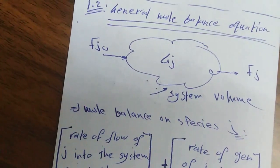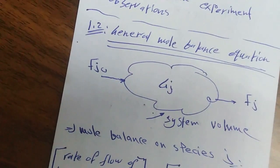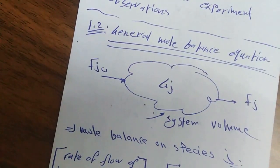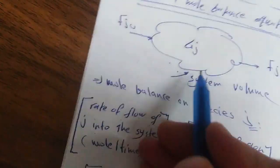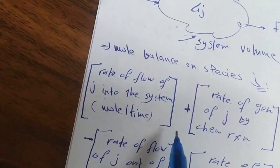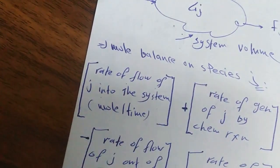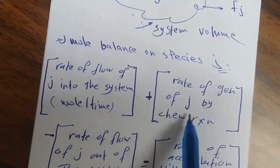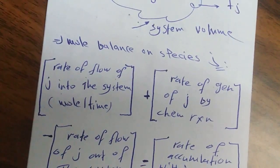Section 1.2 General Mole Balance Equation. حكينا عن Rate of Reaction، بقدر أحدده من خلال General Mole Balance Equation، مش من خلال التعريف الكيميست اللي هو الـ Concentration is Function of Time. لو أخدت الـ System Volume الموجود عندي الـ Species J، فبقدر أكتب الـ Mole Balance Equation. أول حد: Rate of Flow of Species J into the System.